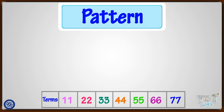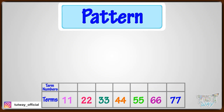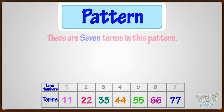Let's give term numbers to the terms. We have given term numbers from 1 to 7 to each term. There are 7 terms in this pattern, where the term number of 11 is 1, term number of 33 is 3, and so on.